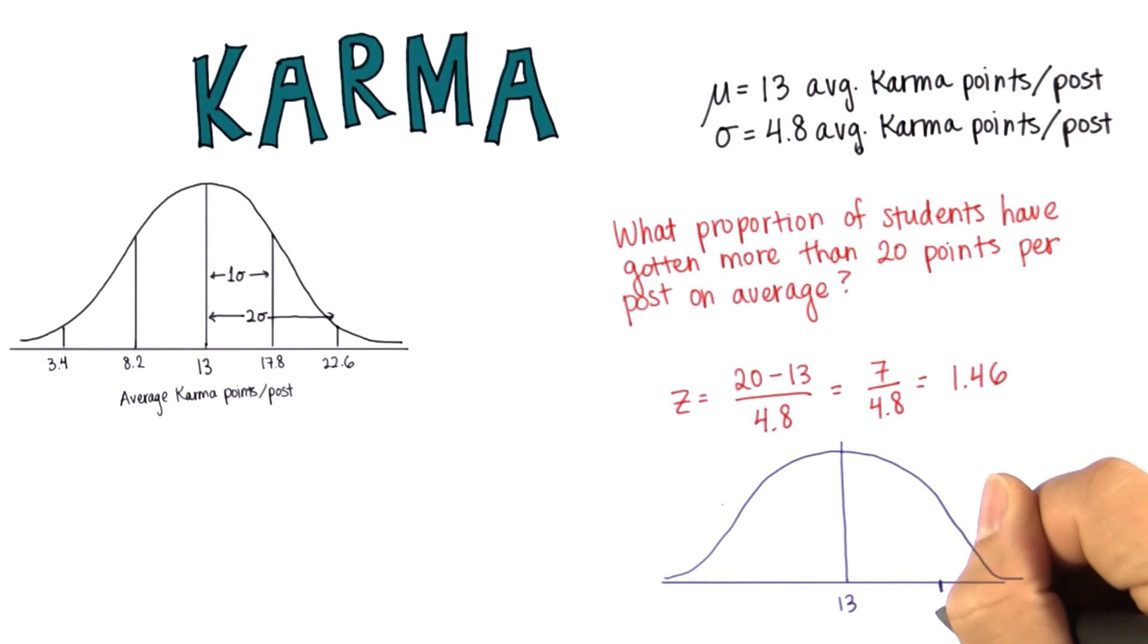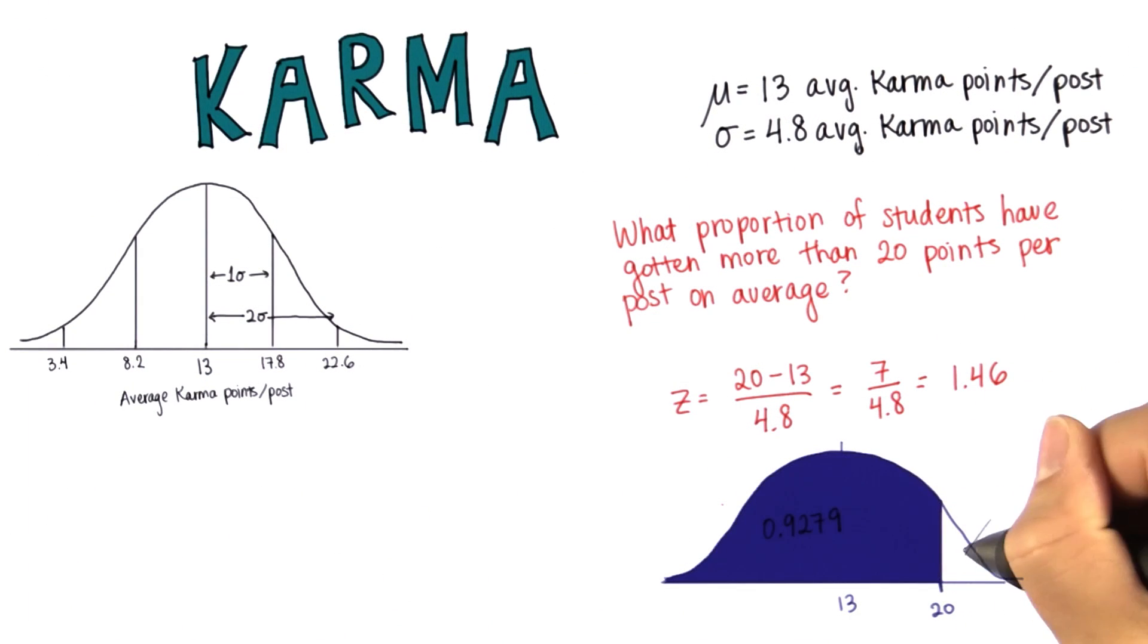So if the proportion less than 20 is 0.9279, then the area above it must be 1 minus 0.9279. Because remember, the total area under the curve will always be 1. This is 0.0721.